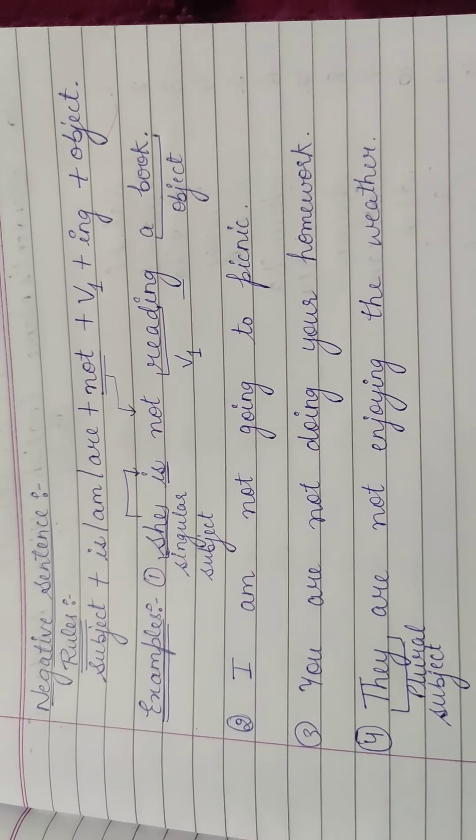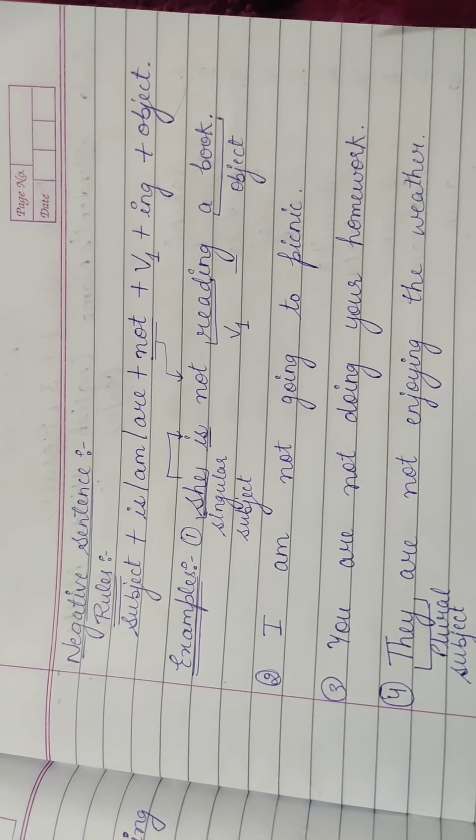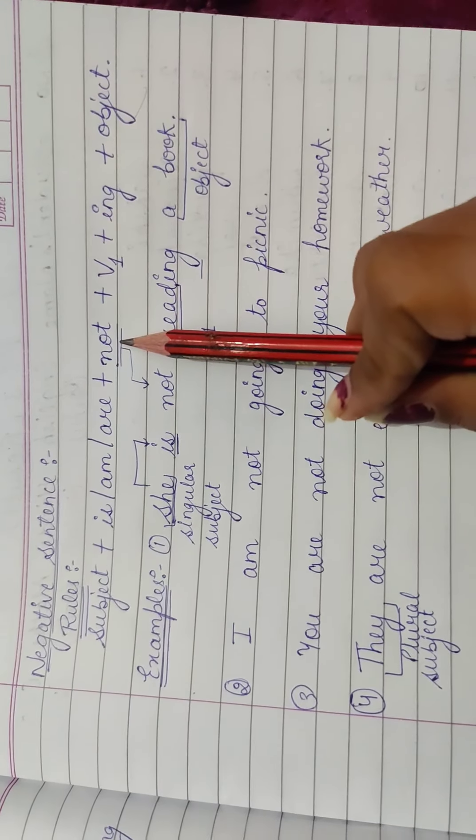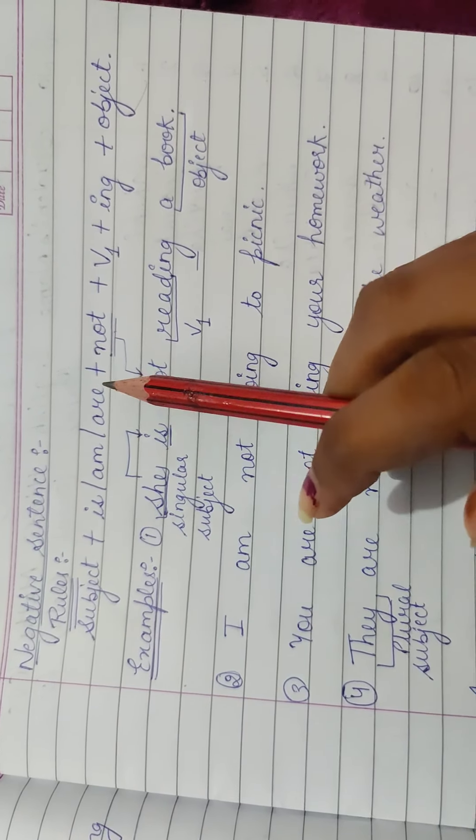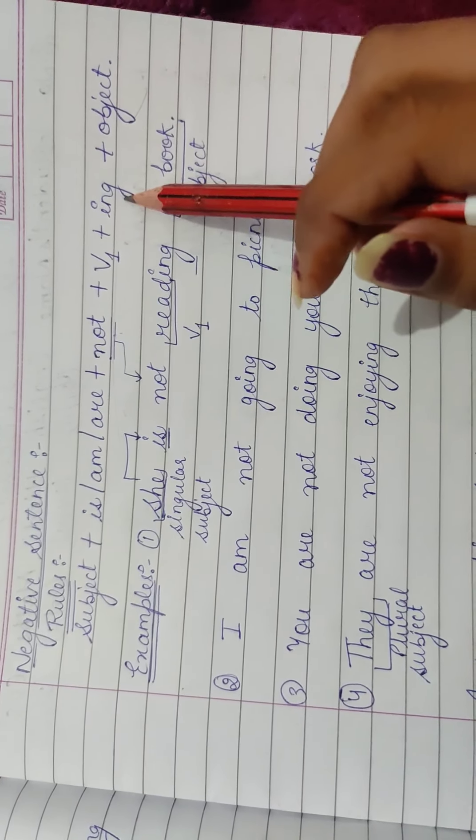To woh humne padhte, positive sentence abhi tak. Ab hum padhenge negative sentence, jis me nahi wala aata hai. To us me bhi kuch bhi farak nahi hai, sirf aur sirf helping verb ke saath not lag jate hai. Baqi sab kuch same rega, as it is rega. Ki subject aagya, phir aapki helping verb hoga is, am, are, sirf not lag jate hai, phir verb ki first form, phir ing, phir object.